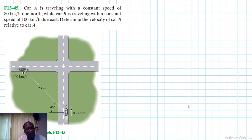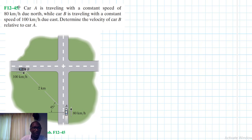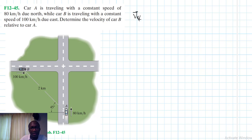This problem comes from Engineering Mechanics and Dynamics, 14th edition by R.C. Hibbeler. We are dealing with relative motion. We have been asked to determine the velocity of Car B relative to Car A, expressed as a vector: V_B/A = V_B minus V_A.